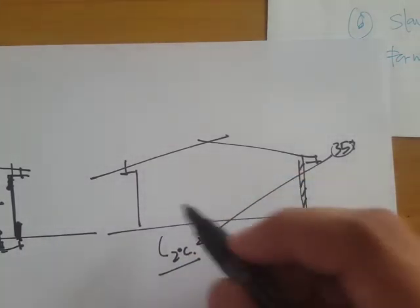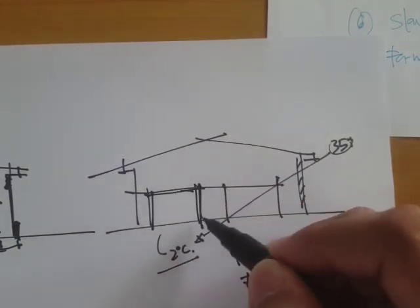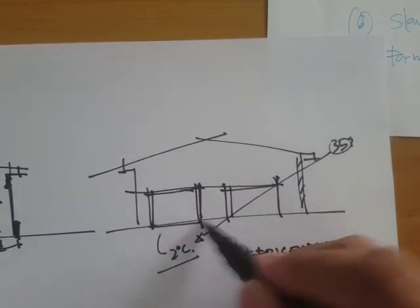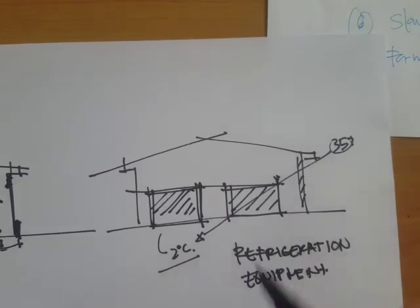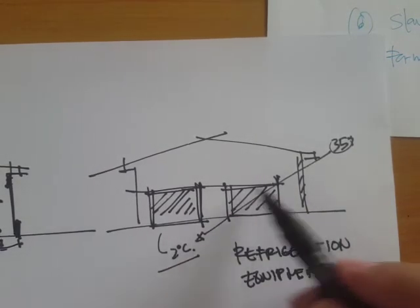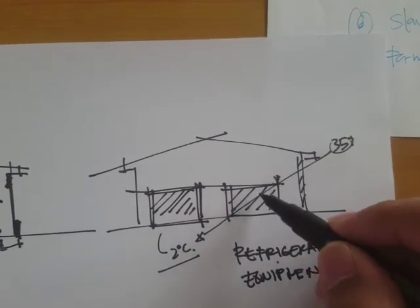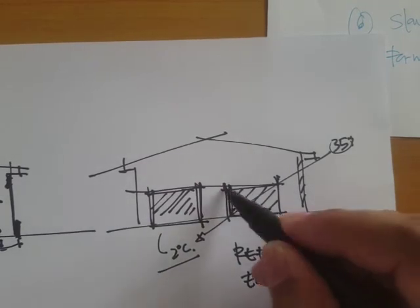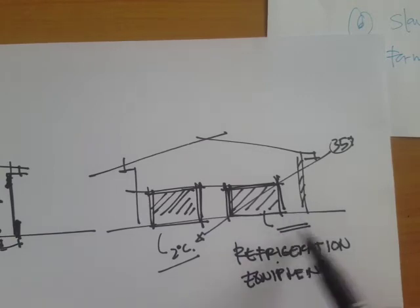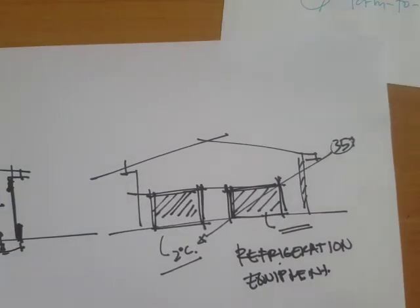For cold storage, insulated walls are necessary. Each room may be dedicated to one product — for example, one room for onions and another for leafy vegetables — with each room equipped with its own refrigeration system to control temperature according to the specific storage temperature requirements prescribed in codes or standards.